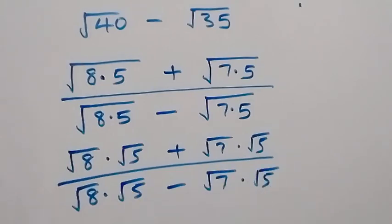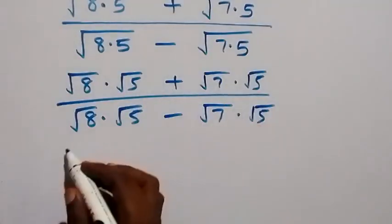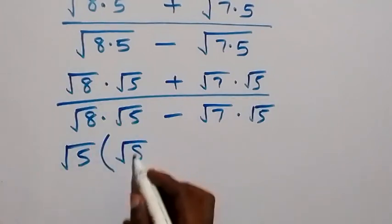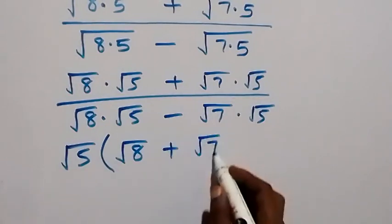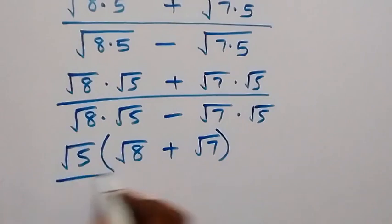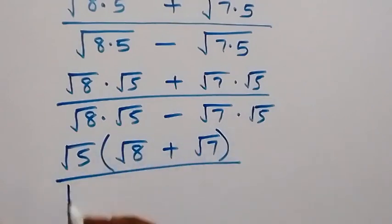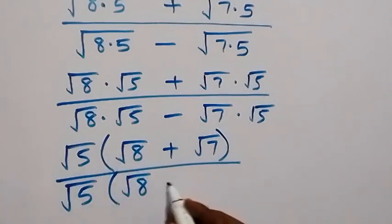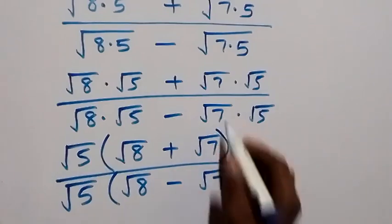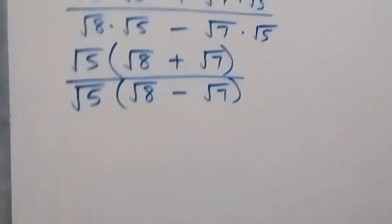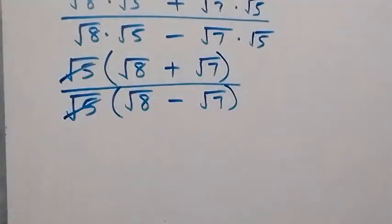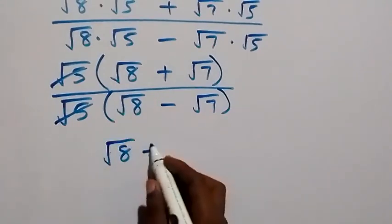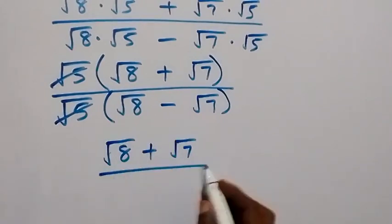When we look at this, we can see root 5 is common. Let's bring it out. We have root 5 into bracket: root 8 plus root 7, close bracket, divided by root 5 common in the denominator, giving root 8 minus root 7. So root 5 cancels with root 5, leaving us with root 8 plus root 7 divided by root 8 minus root 7.